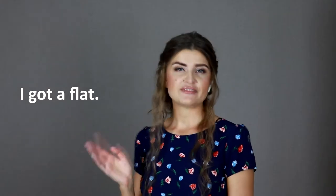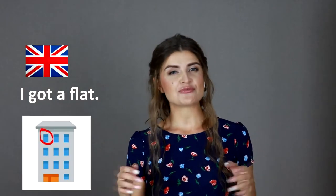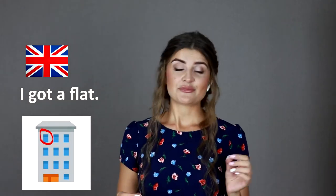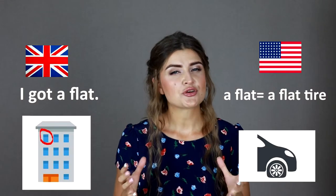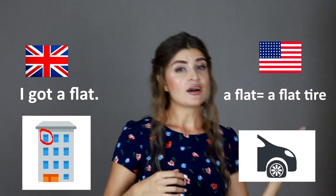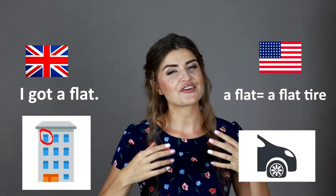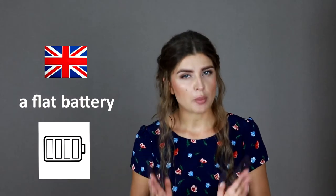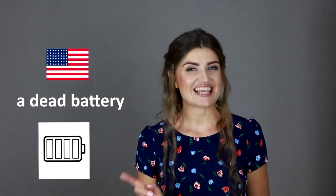Here is another example: 'I got a flat.' In Great Britain, a flat is a set of rooms for living, so for a Brit that phrase has a positive meaning. But in American English, a flat means a flat tire — a tire without air inside. So in American English, 'I've got a flat' has a negative meaning. British people also use 'flat' as an adjective when talking about batteries: a flat battery is a battery with no electrical power left. Whereas in the US, people say a dead battery.